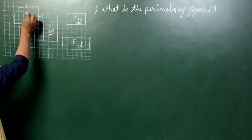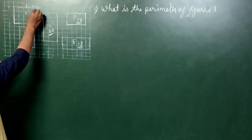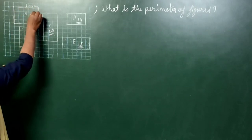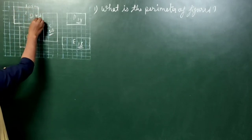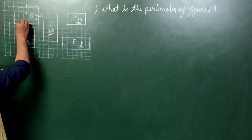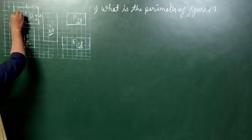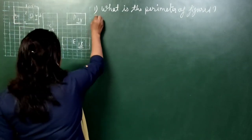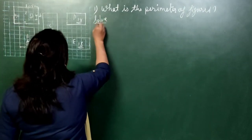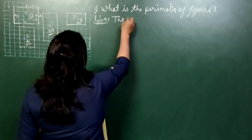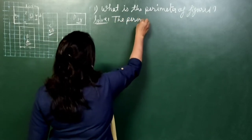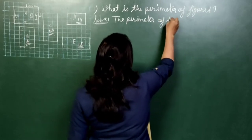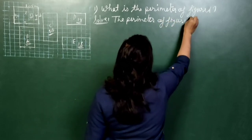Counting the boundaries: the length is 5 squares, the breadth is 4 squares, then again the length is 5, and the breadth is 4 again. So we measure all four sides: 5 cm as length, 4 cm as breadth, 5 cm as length, and 4 cm as breadth.